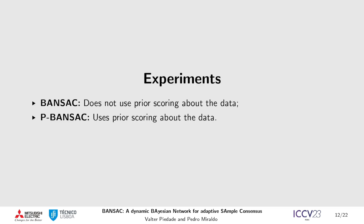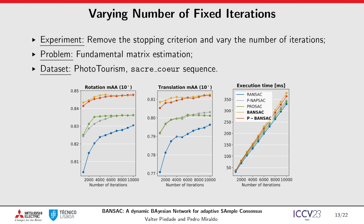To validate BANSAC, we applied it to the problems of essential matrix, fundamental matrix, and homography estimation. We also tested two variants of our method. We refer to BANSAC when no prior scores are used and to P-BANSAC otherwise. In our first experiment, we wanted to check only the performance of the sampling strategy of each method. For that, we removed the stopping criterion and varied the number of iterations given to the estimation. From these results, we see that for the same number of iterations our methods are the most accurate, indicating that our sampling strategy is more efficient.